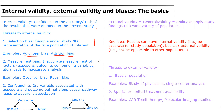The second threat to internal validity is measurement bias. This is when inaccurate measurement of factors such as the exposure, the outcome, or confounding variables leads to an inaccurate analysis. Examples include observer bias and recall bias. Observer bias occurs when study researchers aren't blinded to who got which treatment, so their determinations of the outcome may differ because they want a certain result. Recall bias occurs when we ask patients to recall an exposure from years ago, which may not be accurate.